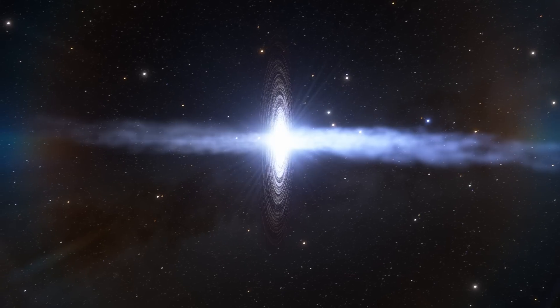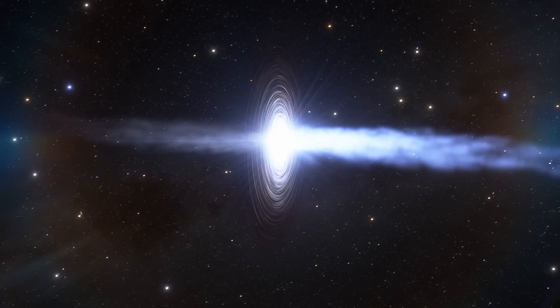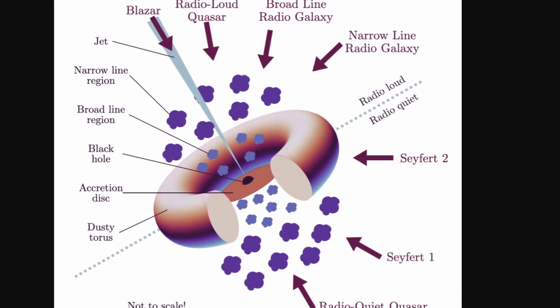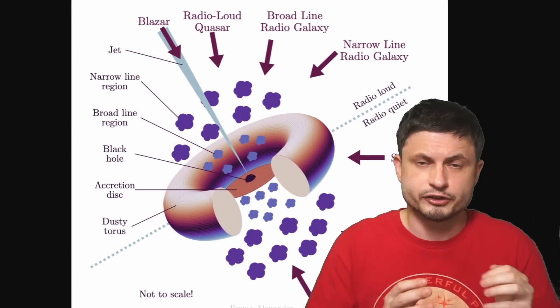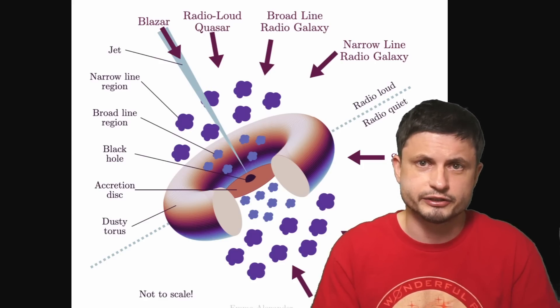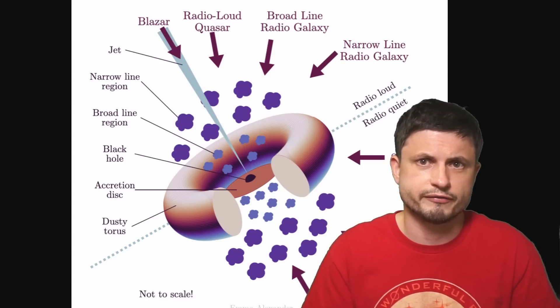Certain galaxies are blazars, certain galaxies are quasars, certain galaxies are Seyfert galaxies. But they're all basically the same thing, just from a different angle. And at the source of all of this are these very powerful magnetic fields at the center, very close to the event horizon.